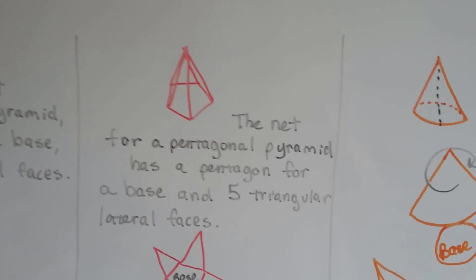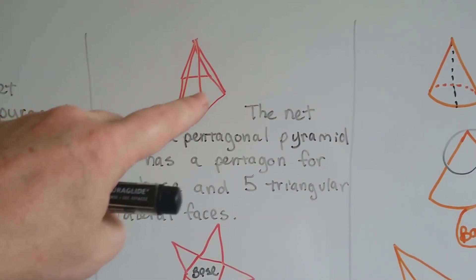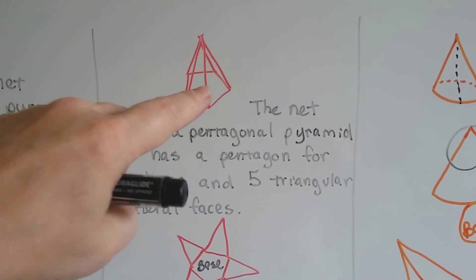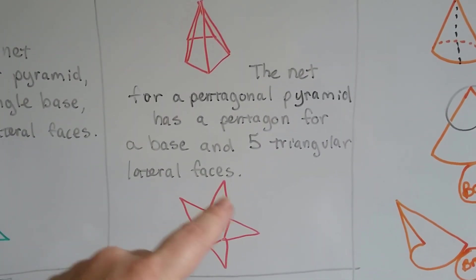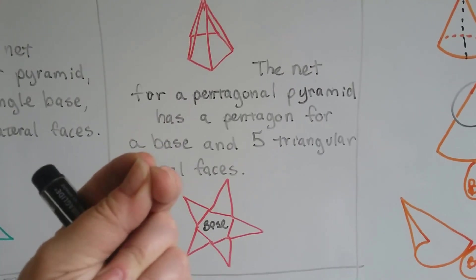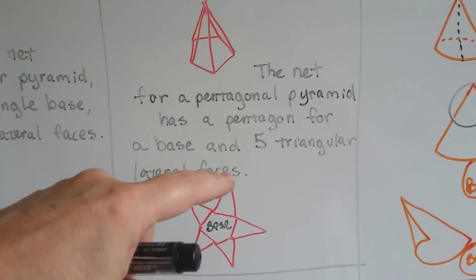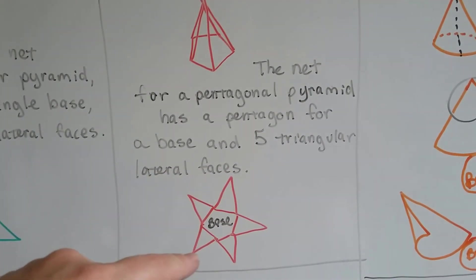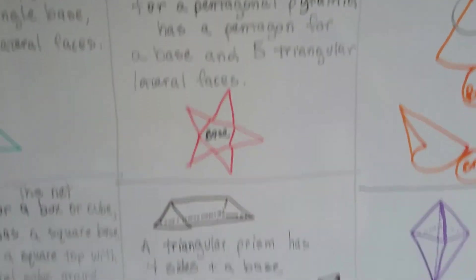The net for a pentagonal pyramid, it's got a pentagon bottom, so it's a pentagonal pyramid. And it's got five triangular sides, lateral faces. And when they fold up like this, the apex at the very, very top is these outside points, these outside vertices. And they can all fold up like that.